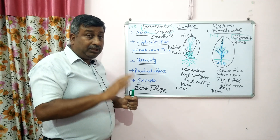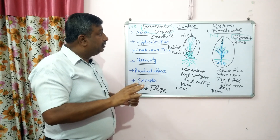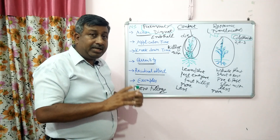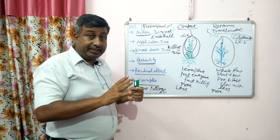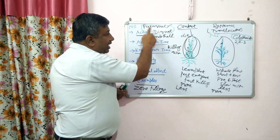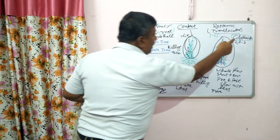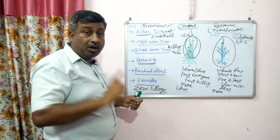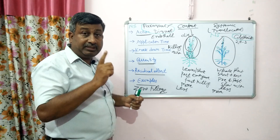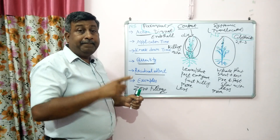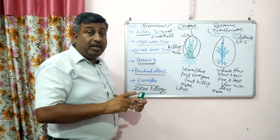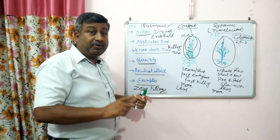Do not use paraquat, diquat, and glyphosate in standing crops. In crops with wide row spacing like sugarcane (75–90 cm) or maize (60–75 cm), these herbicides should be used only in the inter-row space using a hood and avoiding the crop. Otherwise, these herbicides will kill the crop.